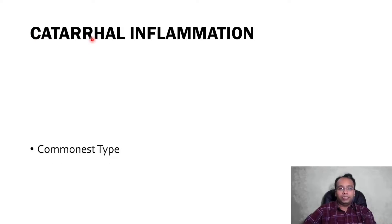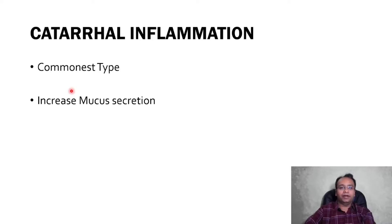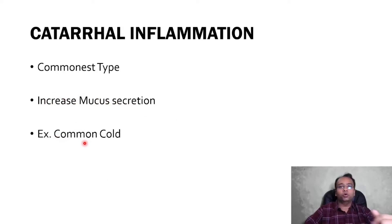We will mainly discuss the microscopic appearance of all types of acute inflammation. First we begin with catarrhal inflammation. It is the very commonest form of morphological pattern of acute inflammation. In our day-to-day life, we suffer from common cold — that is the example of catarrhal inflammation in which mucous production is increased. So common cold is an example of catarrhal inflammation.